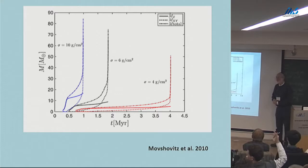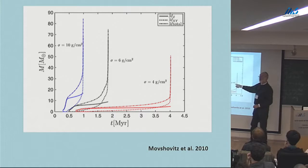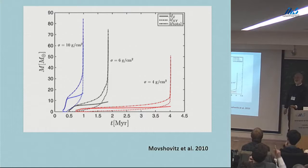The 1 gram per square centimeter reference Dave mentioned was for opacity — this is surface density, different units.